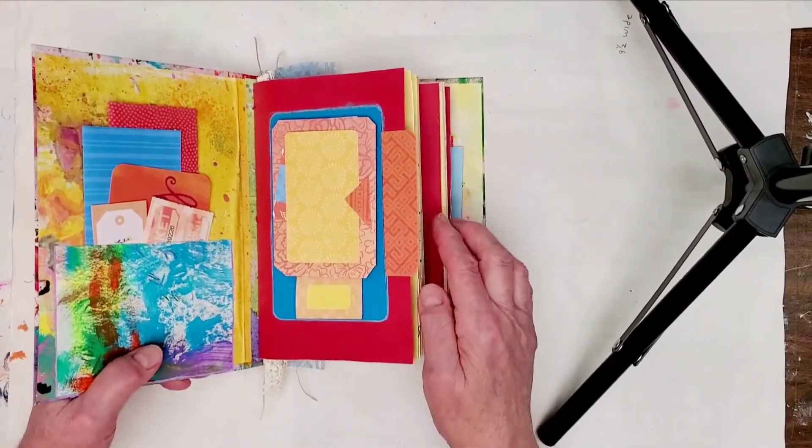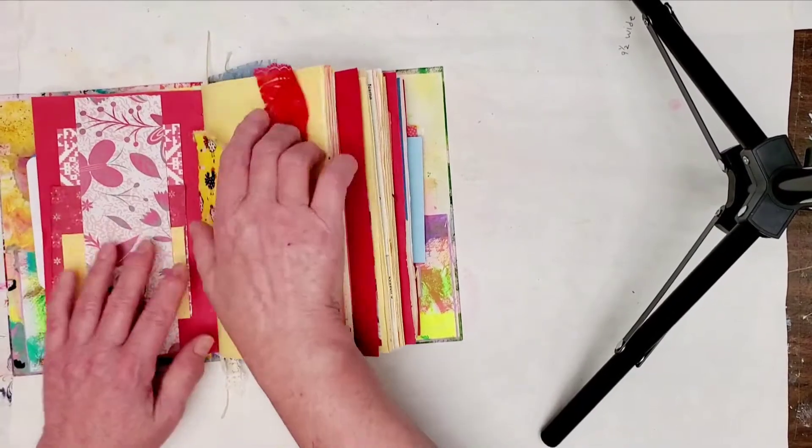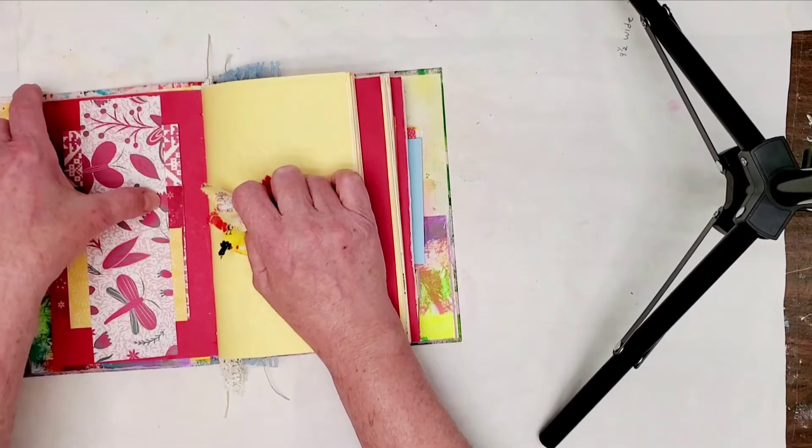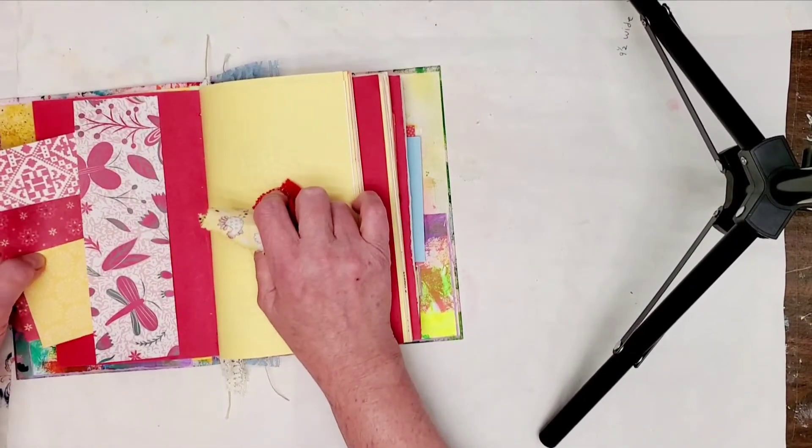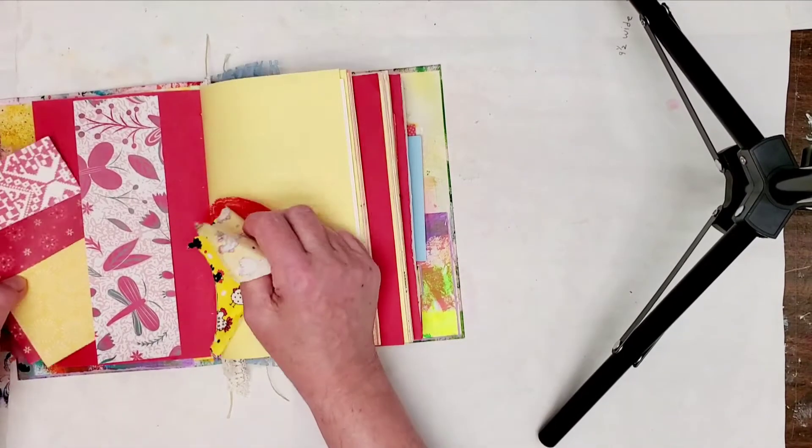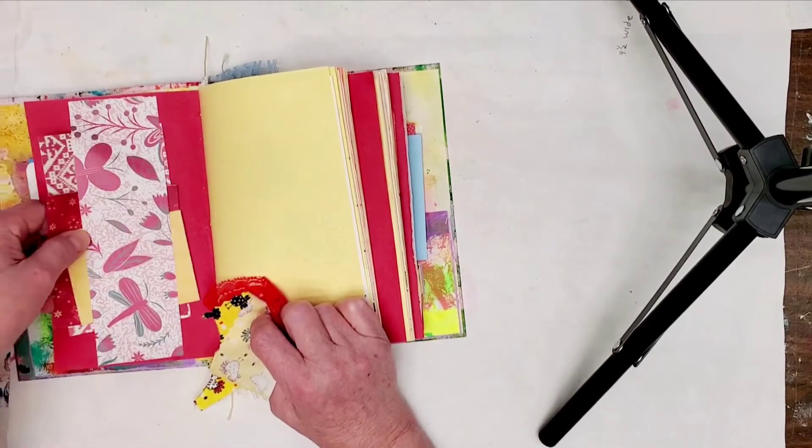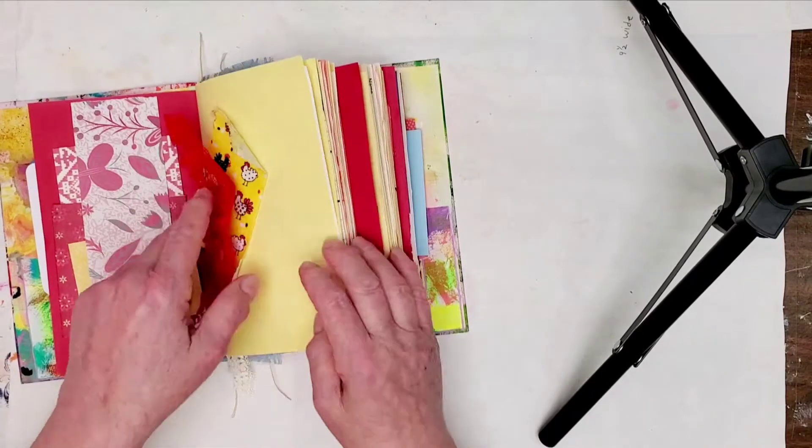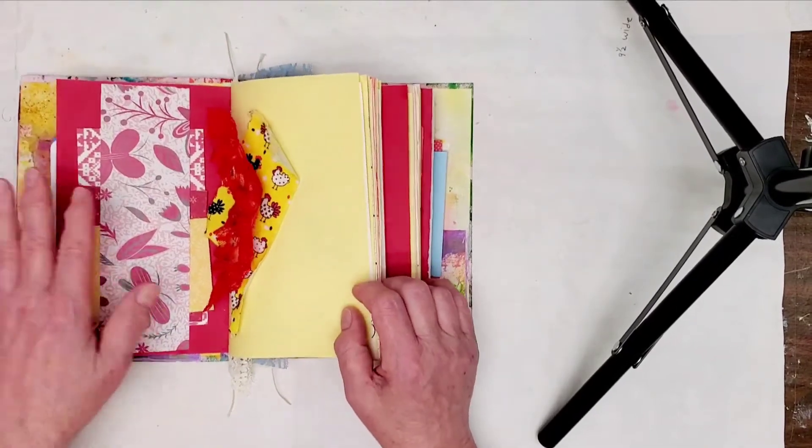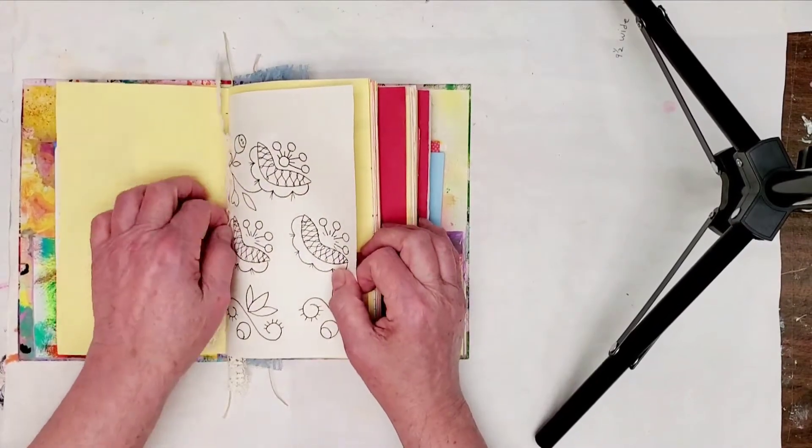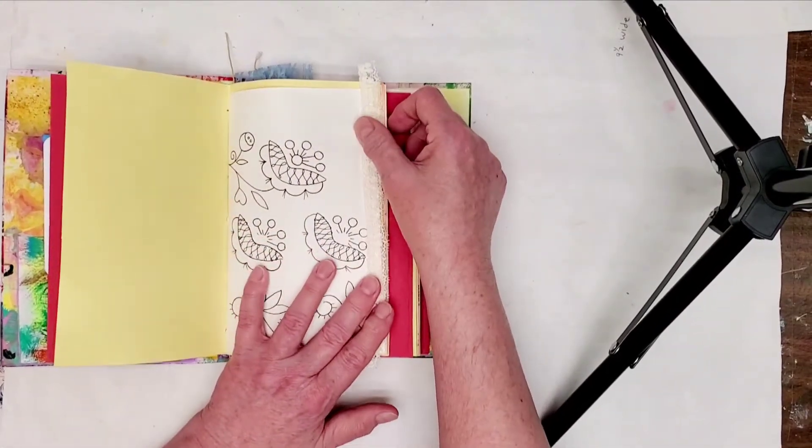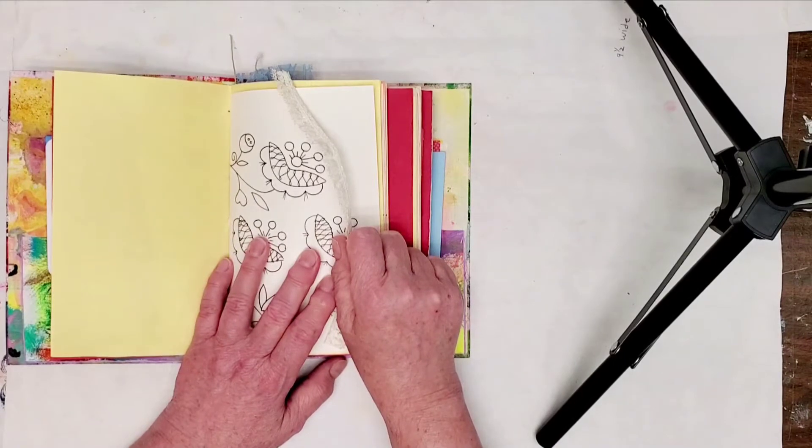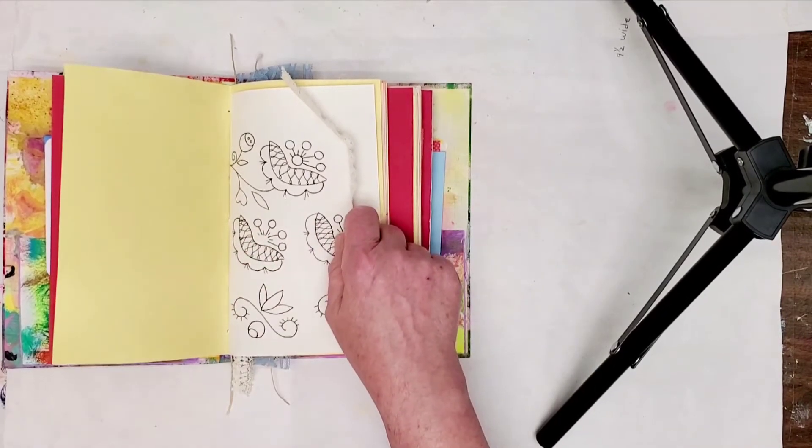Now what I have done is I have gone through all my signatures and I have put in pockets, belly bands, and tuck spots. Then I went back through for each page and added a selection of papers that I wanted to use, and in some cases I added some fabric scraps that I thought might be interesting in this page layout. That's how I get going in my junk journals. I have to start with the pockets and belly bands first, and then I come in with the papers and tags.